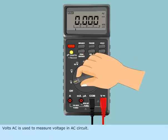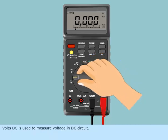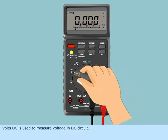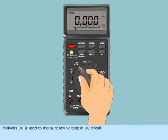Volts AC is used to measure voltage in AC circuit. Volts DC is used to measure voltage in DC circuit. Millivolts DC is used to measure low voltage in DC circuit.